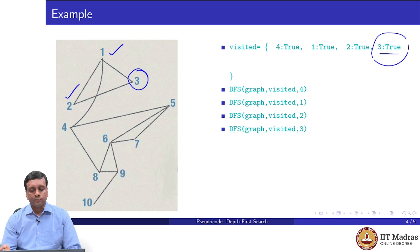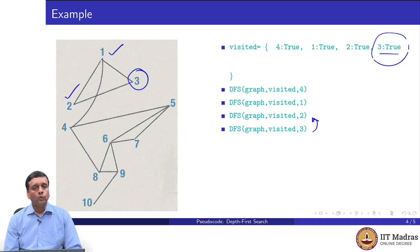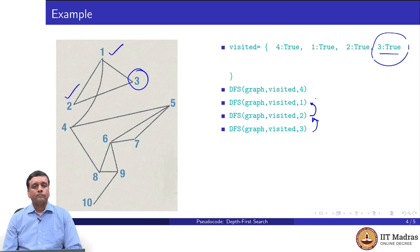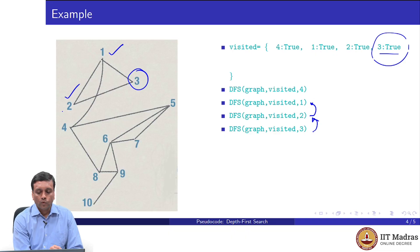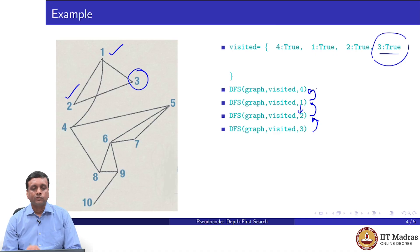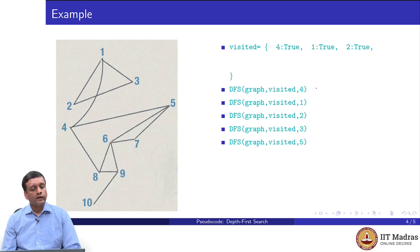DFS for 3 returns back to the DFS call for 2. Now 2 has no changes left because the next vertex to explore from 2 is 4, which is already visited. So 2 returns to 1. The call for 1 has no vertices left to explore — 2 was explored, 3 was visited via 2, and 4 was the one that called 1 to begin with. So I come back to 4. After calling DFS for 1 with all its recursive sub-calls, I return to vertex 4.